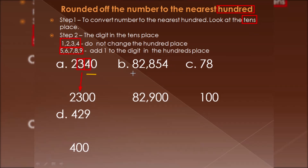Next example: 2854. Look at the hundreds place — it is 8 — and the tens place is 5. Since 5 is equal to 5, we add one to the hundreds place: 1 plus 8 becomes 9. The tens and ones places become zero, and all other digits remain as they are.